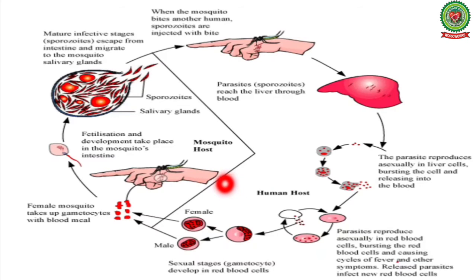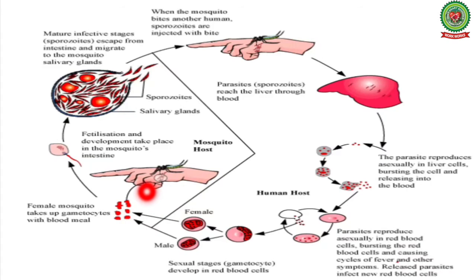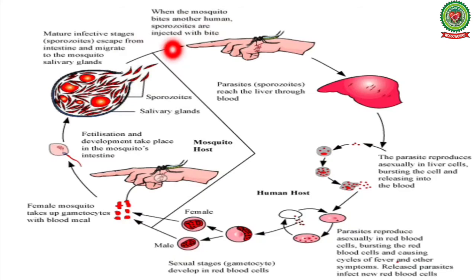In sexual reproduction, the trophozoites result in the production of gametocytes — the germ cells of Plasmodium. These germ cells are transferred into an uninfected mosquito when it bites an infected human, and the gametocytes enter the mosquito along with the blood. Inside the mosquito, the male and female gametocytes fuse to form a zygote. This zygote develops into an oocyst in the gut of the mosquito. The oocyst then reaches the salivary glands, where it releases sporozoites. When this mosquito bites another healthy human, the sporozoites enter their body. So there are two primary hosts: the female Anopheles mosquito and the secondary host — the human being.